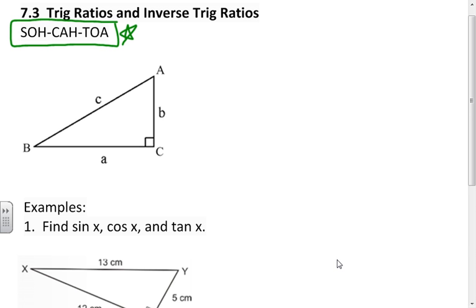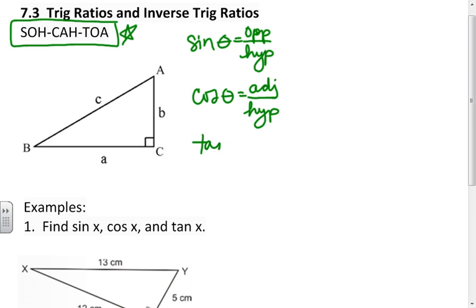This tells you that the sine of an angle is the opposite over the hypotenuse. The cosine of an angle is the adjacent over the hypotenuse. And the tangent of an angle is the opposite over adjacent.